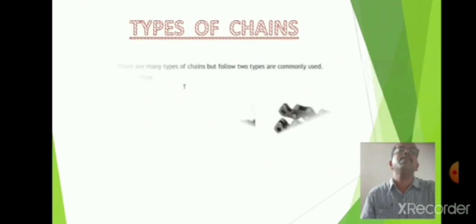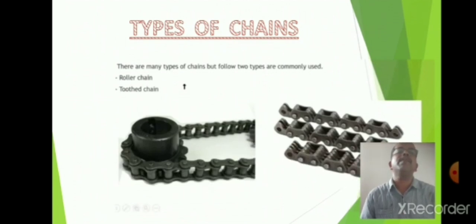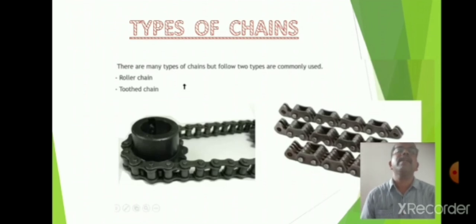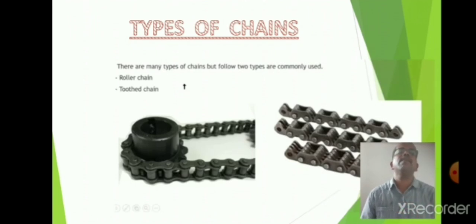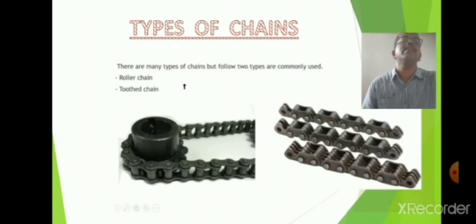Next are the types of chain. There are two types: roller chain and tooth chain. Figure one shows a roller chain meshing with a spur gear-like sprocket, and figure two shows a tooth chain.